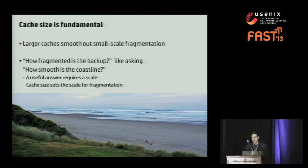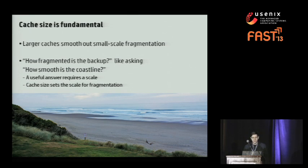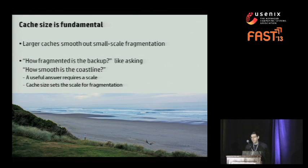You may think cache size is just a property of the way I'm measuring things, but it turns out cache size is actually fundamental. Larger caches smooth out small-scale fragmentation. Asking how fragmented the backup is is kind of like asking how smooth is the coastline — there isn't really a single useful answer, you can only give an answer given a scale. For fragmentation, cache size is what sets the scale.